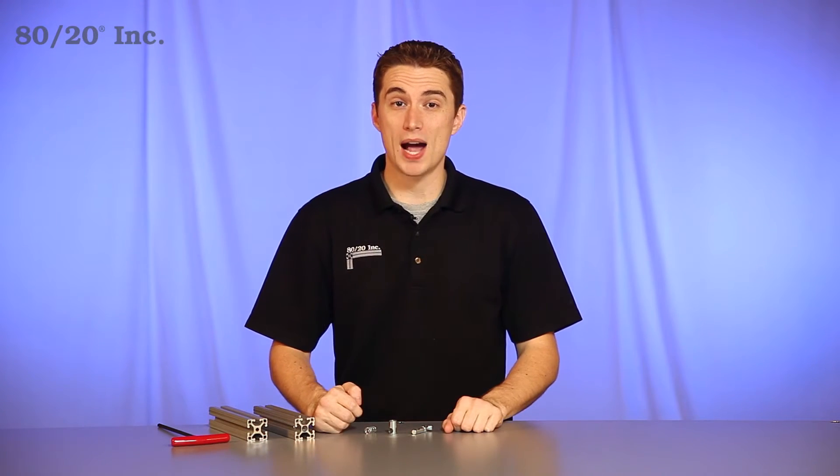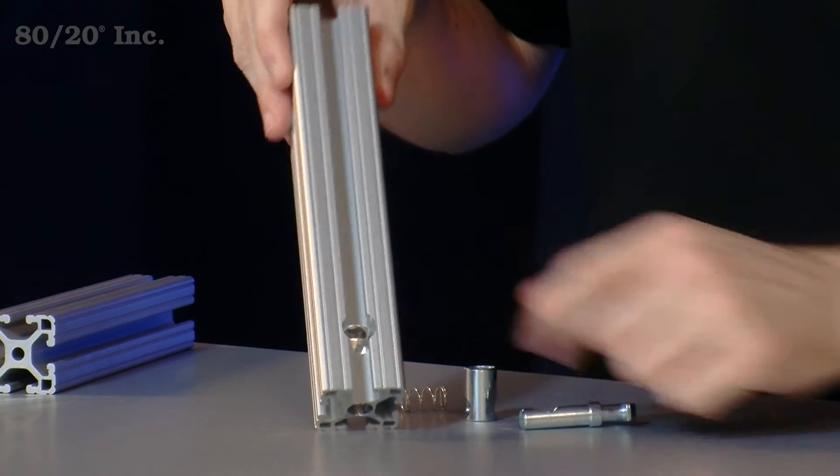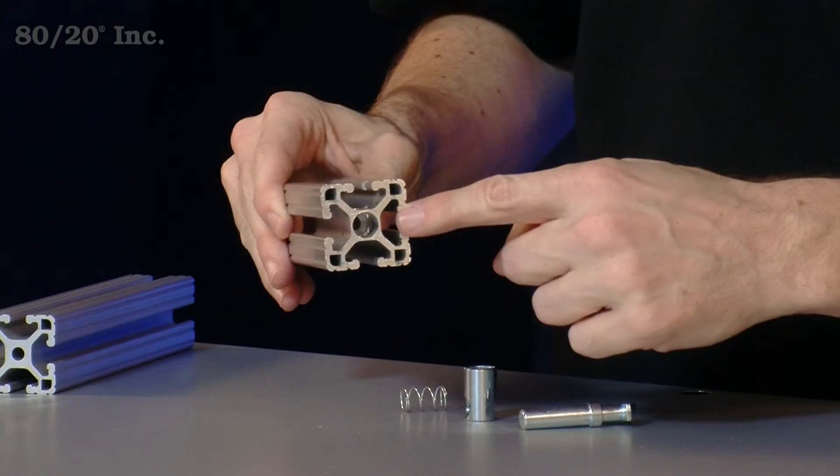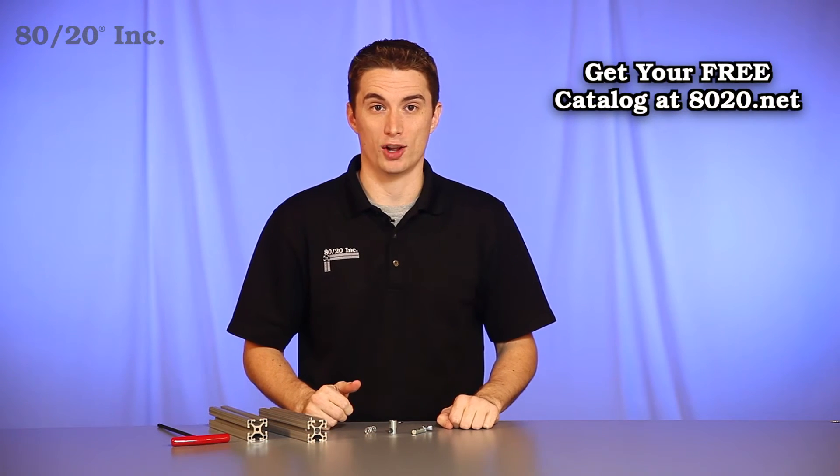Now one thing you'll want to keep in mind when using the central connector is one of your bars is going to be machined with a counter bore surface and a hole drilled in the center cavity of it. More information on central connector machining services can be found in the 8020 product catalog.